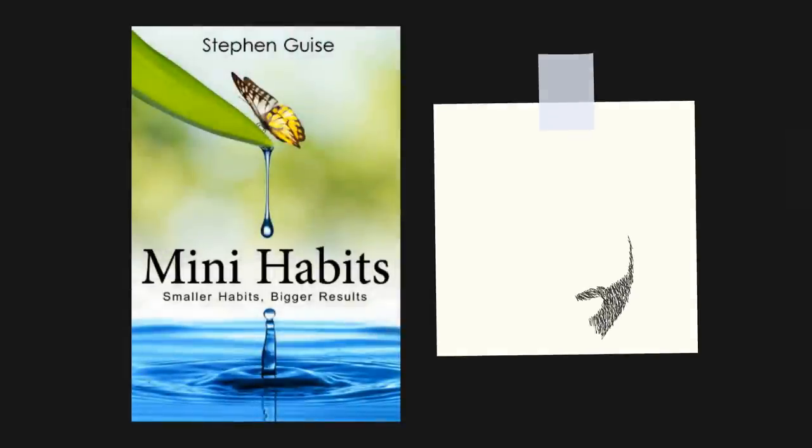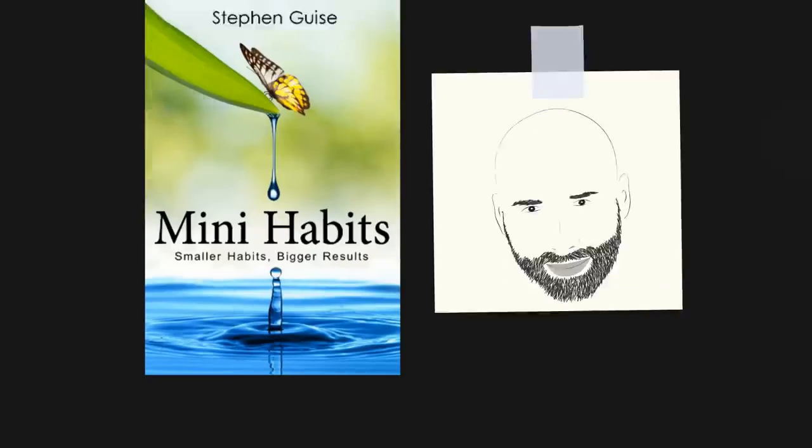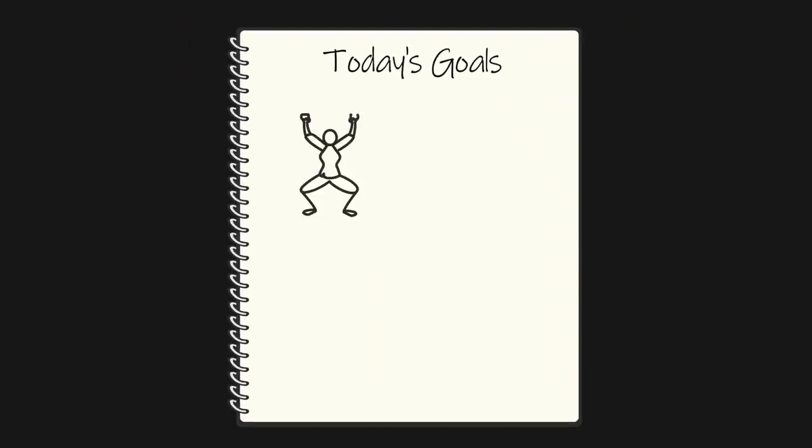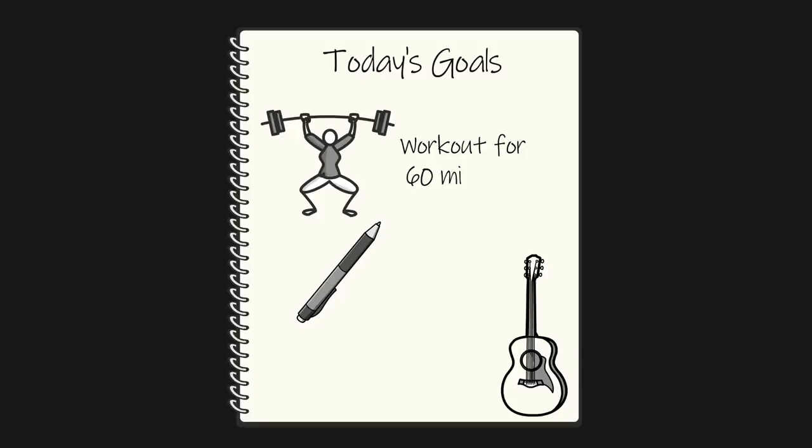I recently read Mini Habits by Steven Guise. When trying to build an exercise habit, or write a book, or develop a new skill, most people assume they need to take massive action. Work out for 60 minutes in the morning, write 5,000 words in the afternoon, and practice two hours at night.